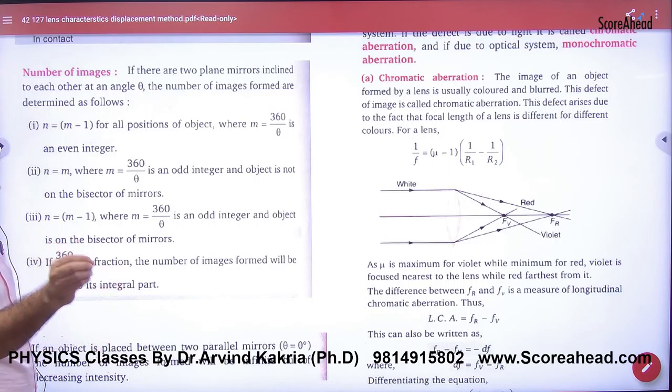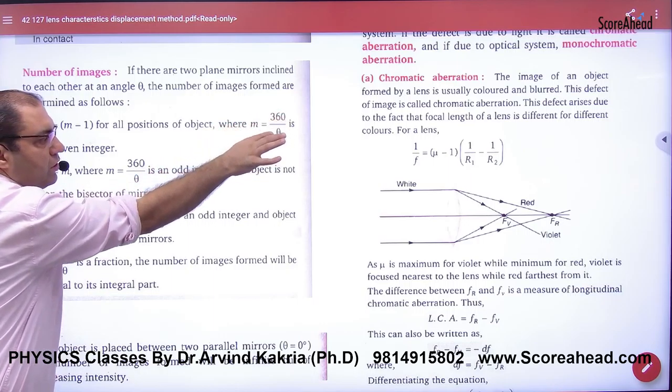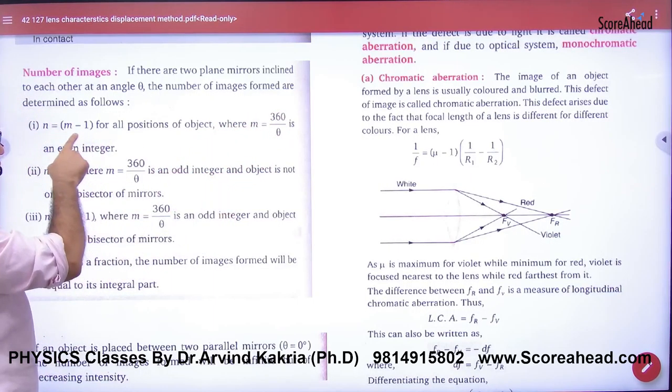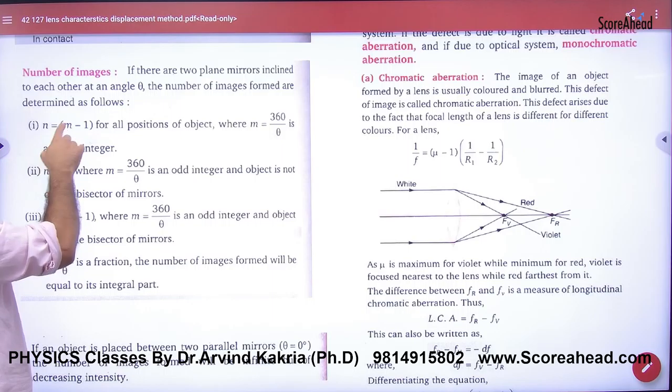So in two mirrors, if the angle theta is 60 degrees, put here 60. 360 divided by 60 is 6. So how much will the number of images be? 6-1 equals 5.